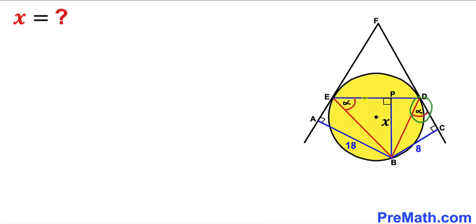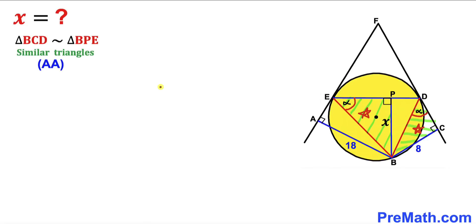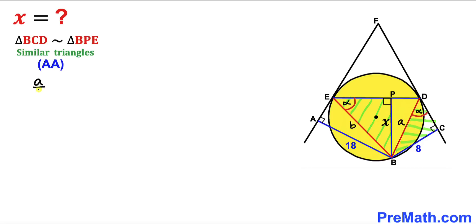We have proven that these two angles are congruent. Now let's focus on two right triangles: triangle BCD and triangle PBE, and conclude that these two triangles are similar according to the angle similarity theorem. Let's assume BD has length A units and EB has length b units. Then we have the proportion: A divided by b equals 8 divided by x. Let me call this equation 1.